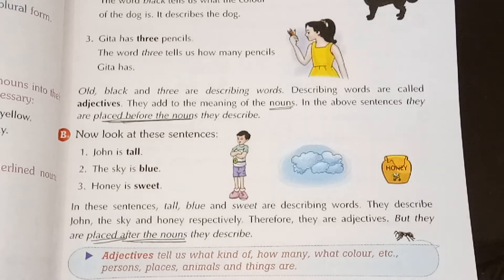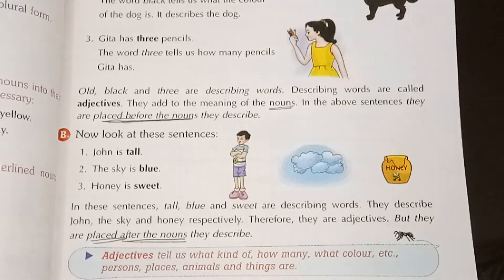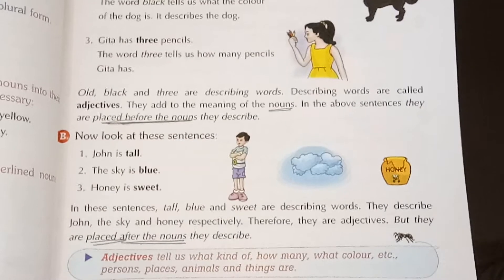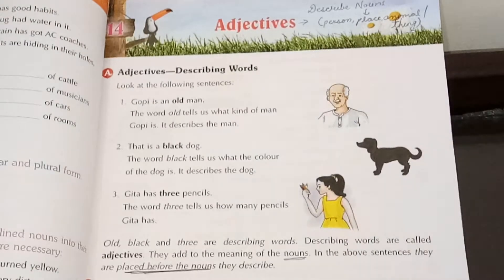So here is the definition of adjectives. Adjectives tell us what kind of, how many, what color, etc., a person, place, animal or thing is. They describe the nouns in any of these ways.